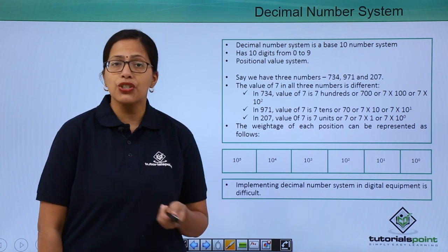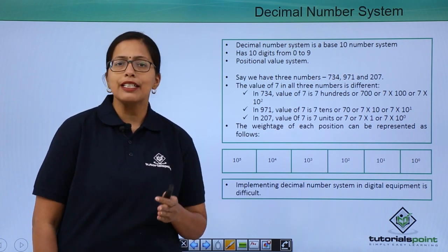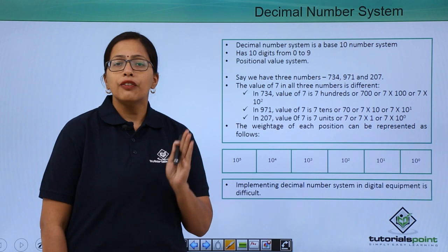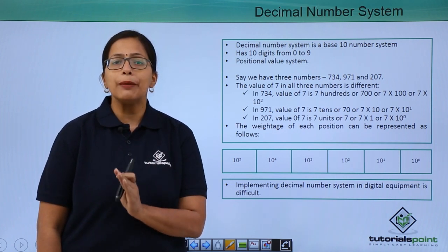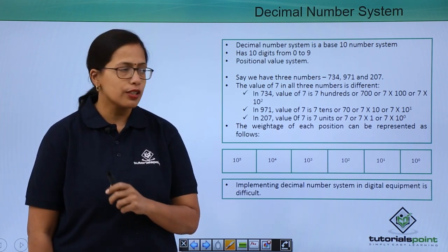What does being a positional value system mean? It means that every digit, the value of every digit will depend upon the position that it holds.